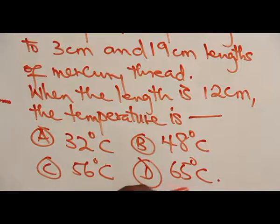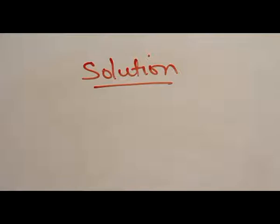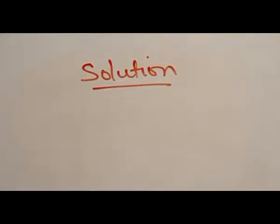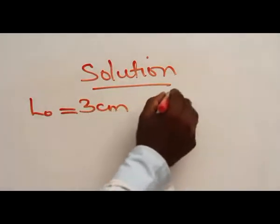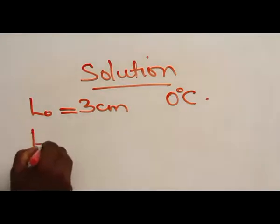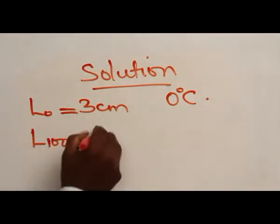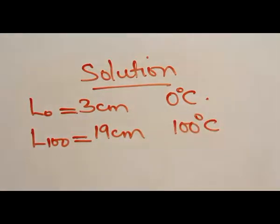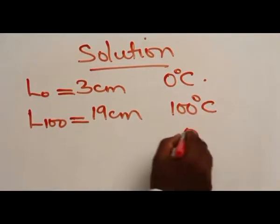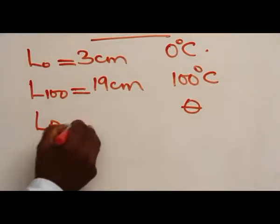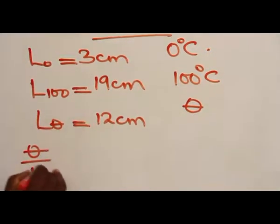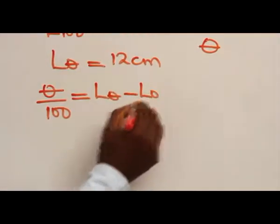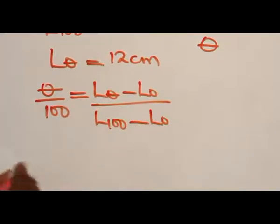The length at the ice point, L₀, is 3 cm at 0°C. The length at the steam point is 19 cm at 100°C. We are asked to find the temperature corresponding to a length of 12 cm. The unknown temperature is θ and the corresponding length is 12 cm. Applying the formula: θ/100 = (L_θ − L₀) / (L₁₀₀ − L₀).